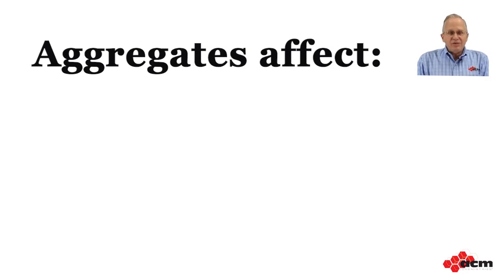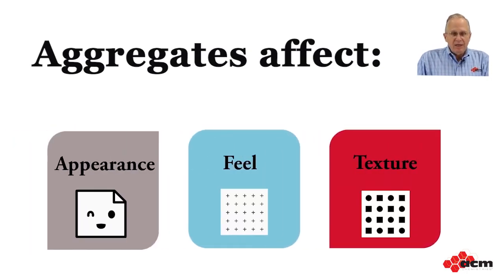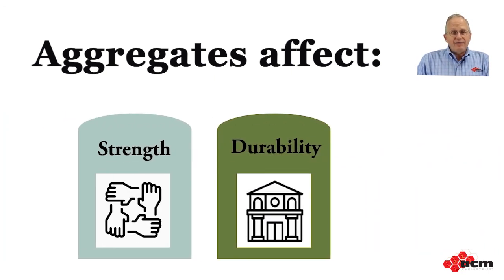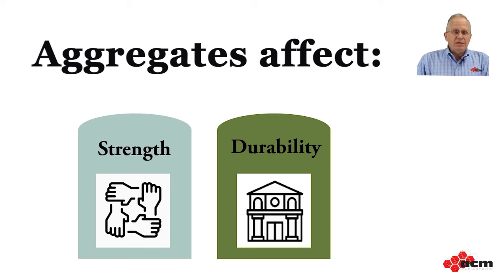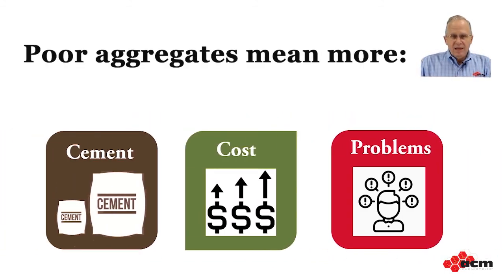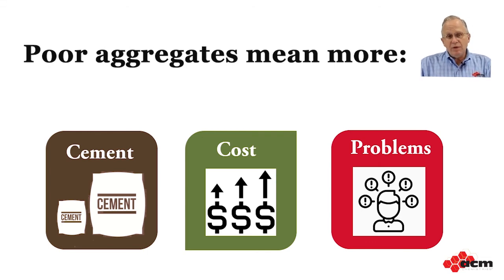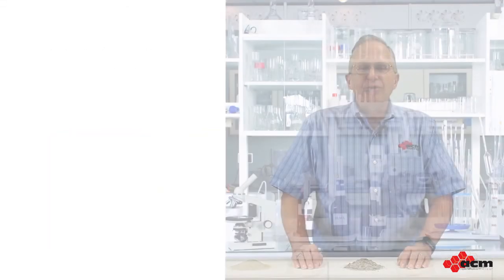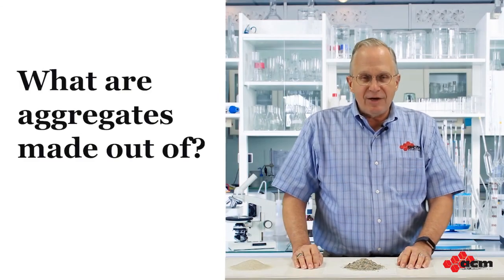This affects all the properties of the concrete, and how it looks, feels, and the texture of the units. Poor or out-of-spec aggregates can limit the strength that we can get in our concrete products, and can adversely affect the durability and service life. Finally, aggregates have a big impact on the economy of our mix and how much cement we end up using. So let's look a little closer at our aggregates.